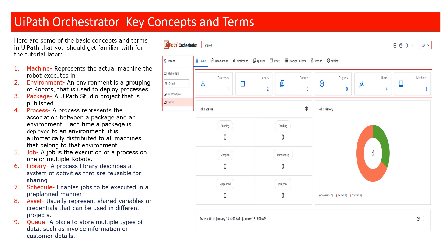What is a library? A process is called a library if it contains reusable activities that can be shared between different processes. For example, if you create an automation for logging into SAP, you can publish that as a library so that the same code can be used in different automation projects.